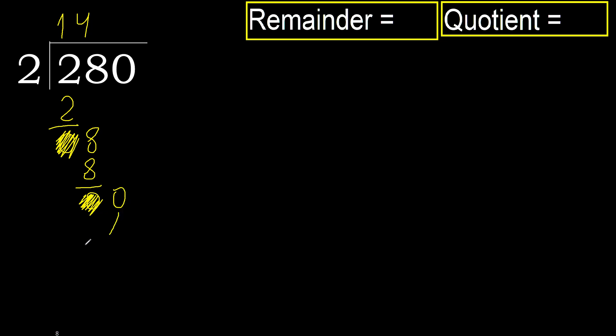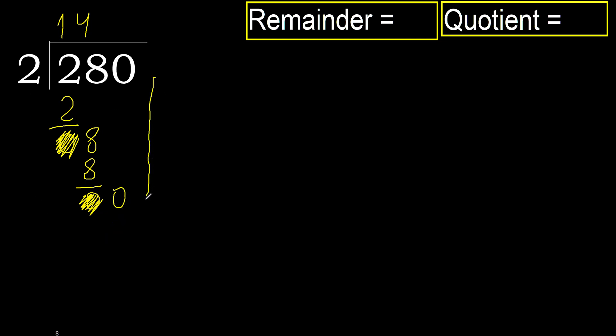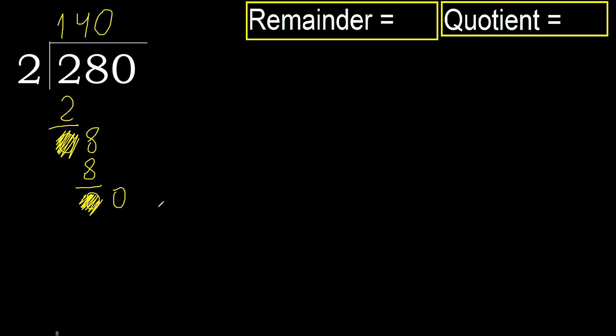0 is less than 2, therefore we move to the next digit. That is not a number to divide, therefore finish it. Complete — write 0 because we finish with this number.